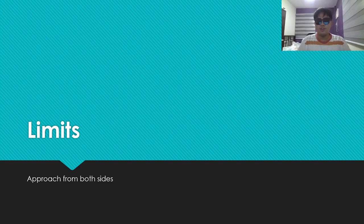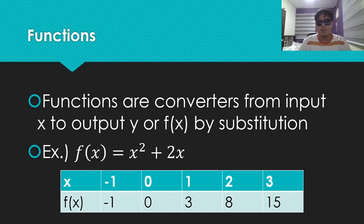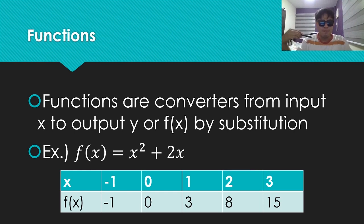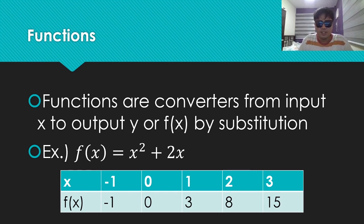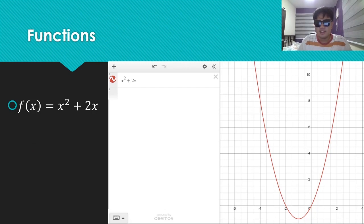Let's discuss the first thing that comes to mind when Calculus is involved, and that is limits. But first, let's talk about functions. Basically, functions are converters from input x to output y, or f of x, doing this by substitution. For example, f of x equals x squared plus 2x. We can see in the table the range of values we get when we substitute x. So x equals negative 1 gives f of x equals negative 1; x equals 0 gives f of x equals 0; x equals 1 gives f of x equals 3; x equals 2 gives f of x equals 8, and so on. This is the graphical representation of x squared plus 2x as plotted in Desmos.